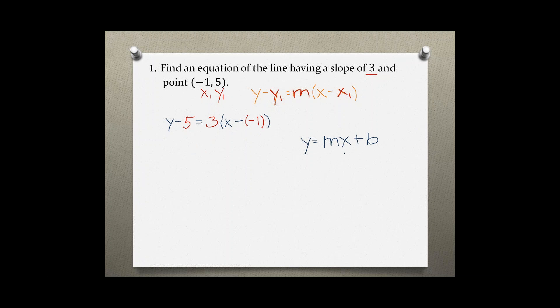Right here, let's combine those two signs, which gives us a positive. Then let's distribute the 3, which gives us y - 5 = 3x + 3.